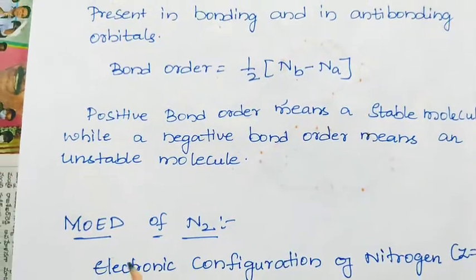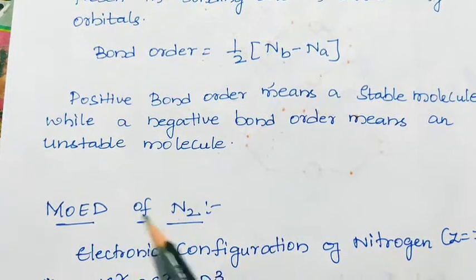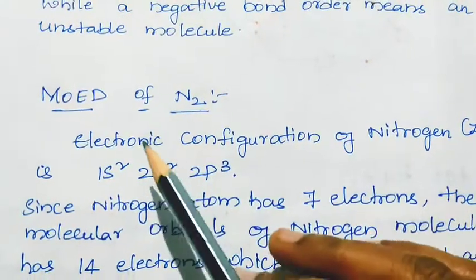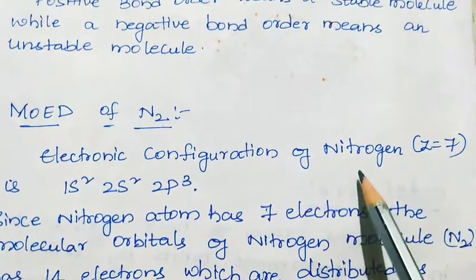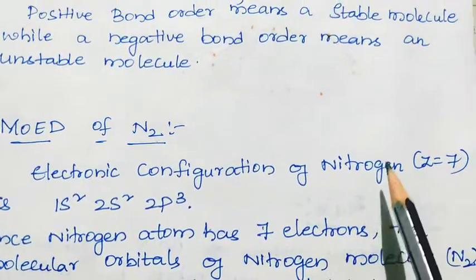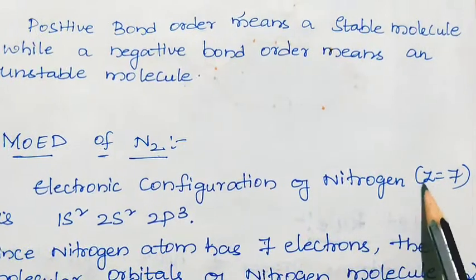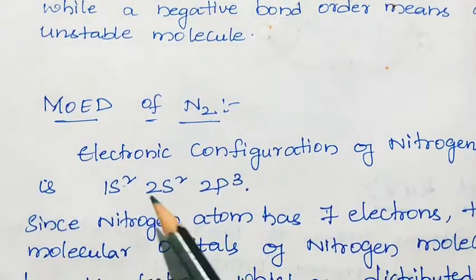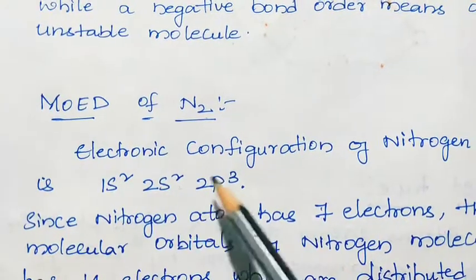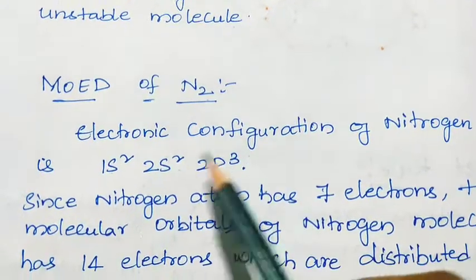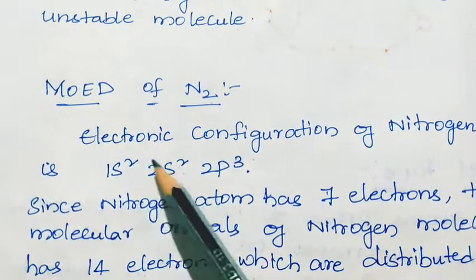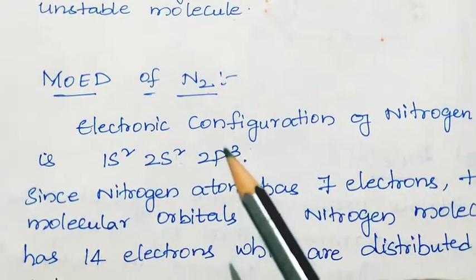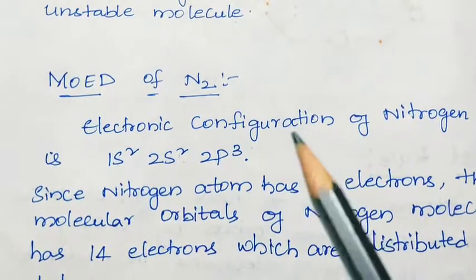First we will see the molecular orbital energy diagram of nitrogen molecule. The electronic configuration of nitrogen atom: the atomic number of nitrogen is 7, and its electronic configuration is 1s2, 2s2, and 2p3. Totally 7 electrons are present in the nitrogen atom.